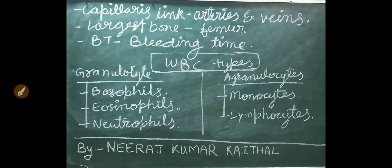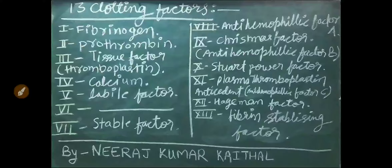White blood corpuscles are classified into two types: granulocytes and agranulocytes. Granulocyte WBCs are three types: basophils, eosinophils, and neutrophils. Agranulocyte WBCs are two types: monocytes and lymphocytes.